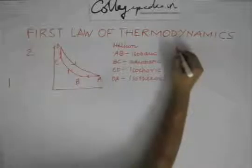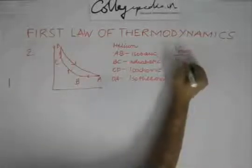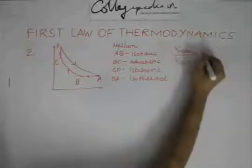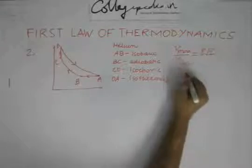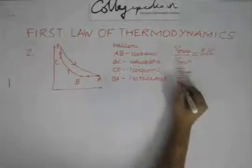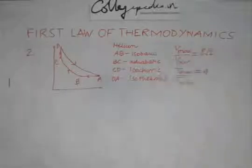There is some more information given. It is said that the maximum volume by the minimum volume in the cycle, this ratio is nothing but 8 root 2. It is also said that the maximum temperature and the minimum temperature ratio, this ratio is also given as 4. This is the data which is given.